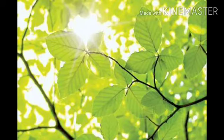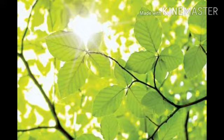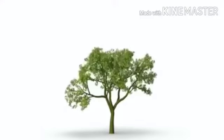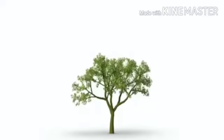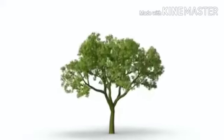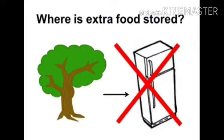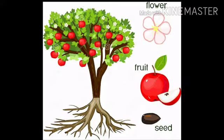Basically, plants make their own food with the help of leaves. Some part of the food that is prepared by the plants is used in their growth. But what about the extra food that is left by the plants? Because plants don't have refrigerators like we have in our houses to store food. So the plants store the extra food in different parts of the plant.